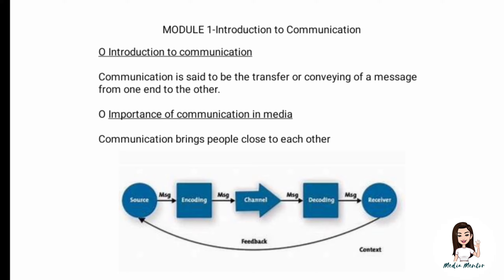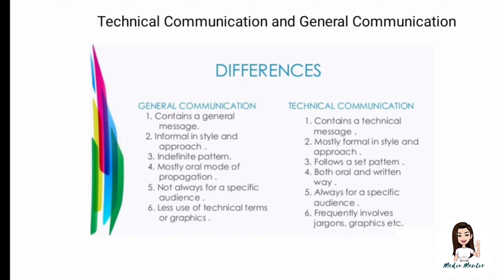Next, there are two important types: technical communication and general communication. General communication contains a very basic message. It is informal in style and approach — it has no specific pattern and no systematic order. It is mostly oral and does not require a specific type of audience. It uses little to no technical terms or graphics, and you do not need to be specifically trained to understand it.